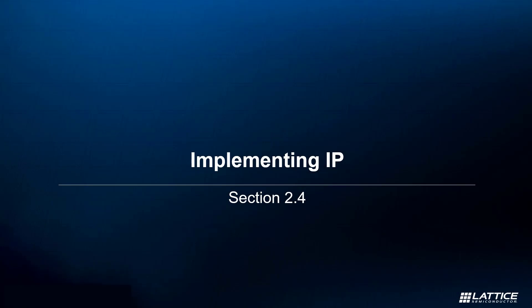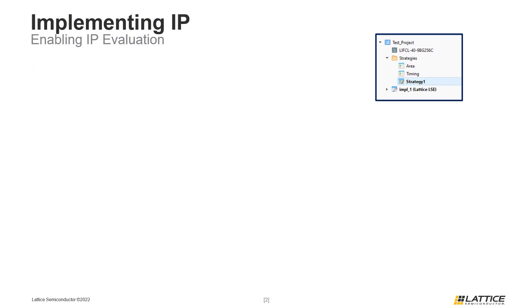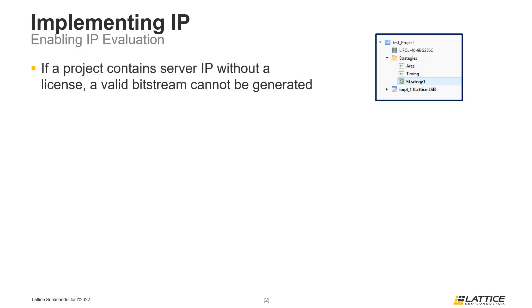Chapter 2, Section 4: Implementing IP. In this section of the video series, we will be discussing the process for implementing IP using Radiant's IP Catalog. As mentioned in the previous section, users will have to modify the active strategy for their project if they want to use an IP from the IP server and do not have a valid IP license.